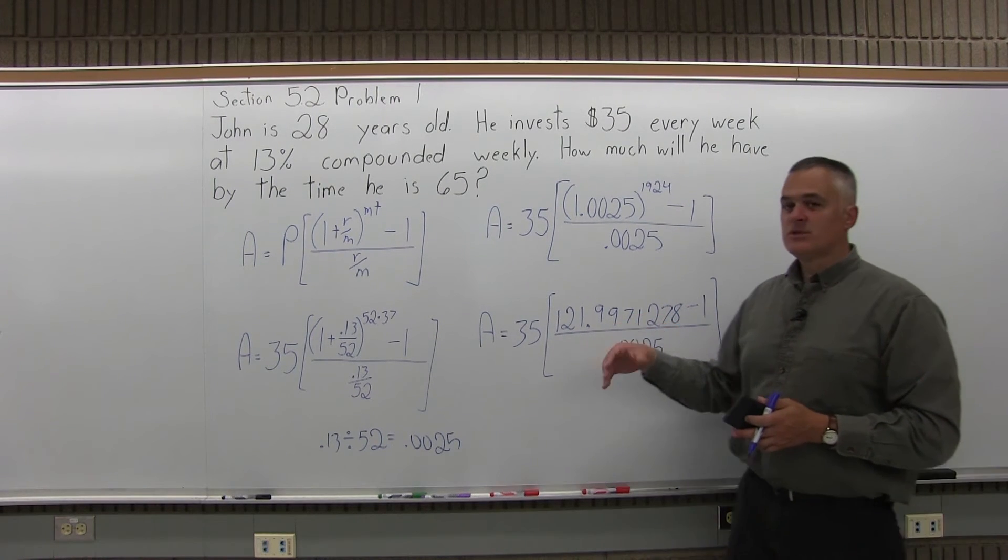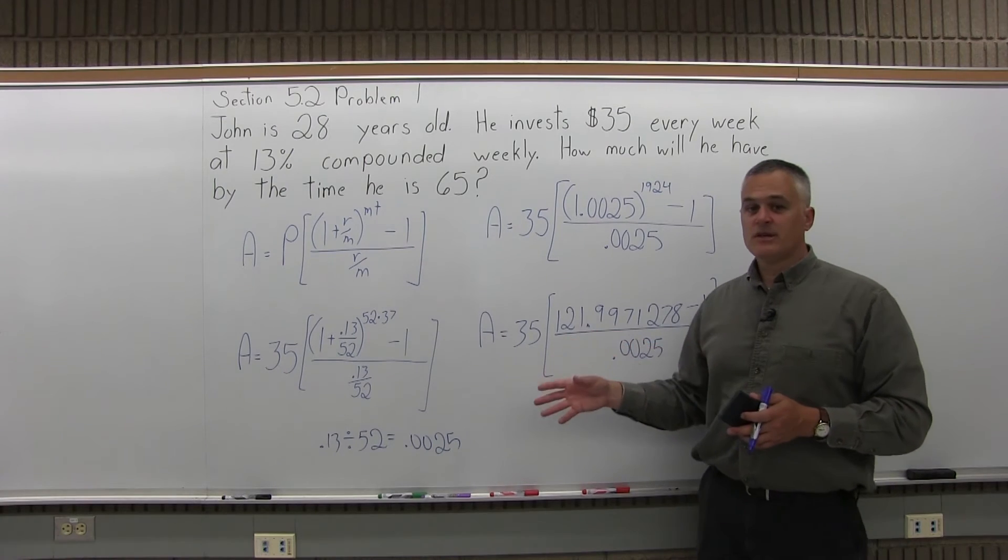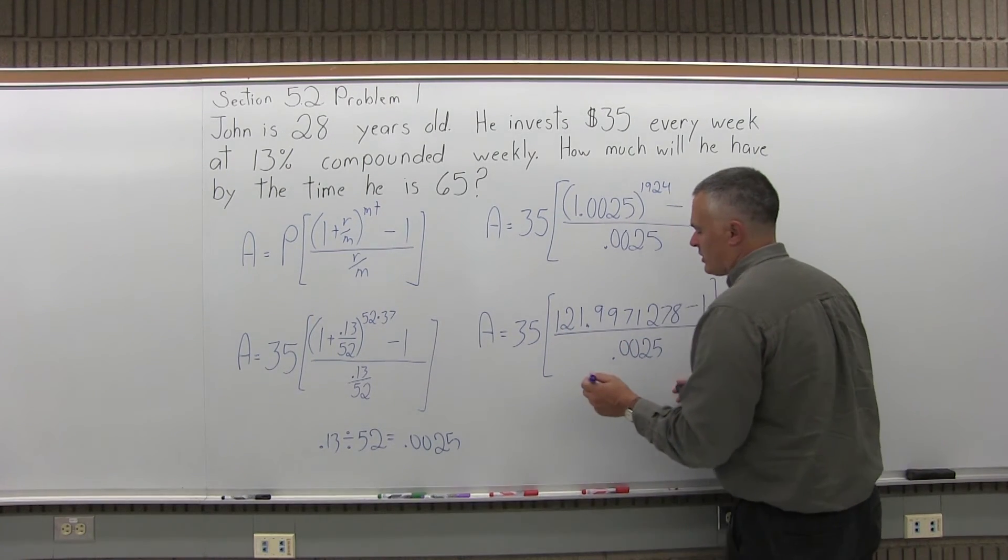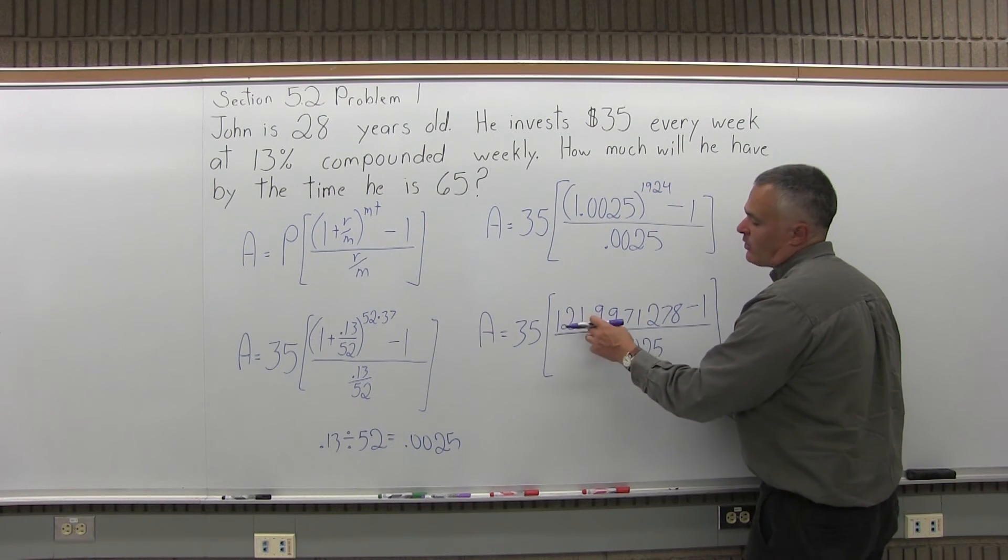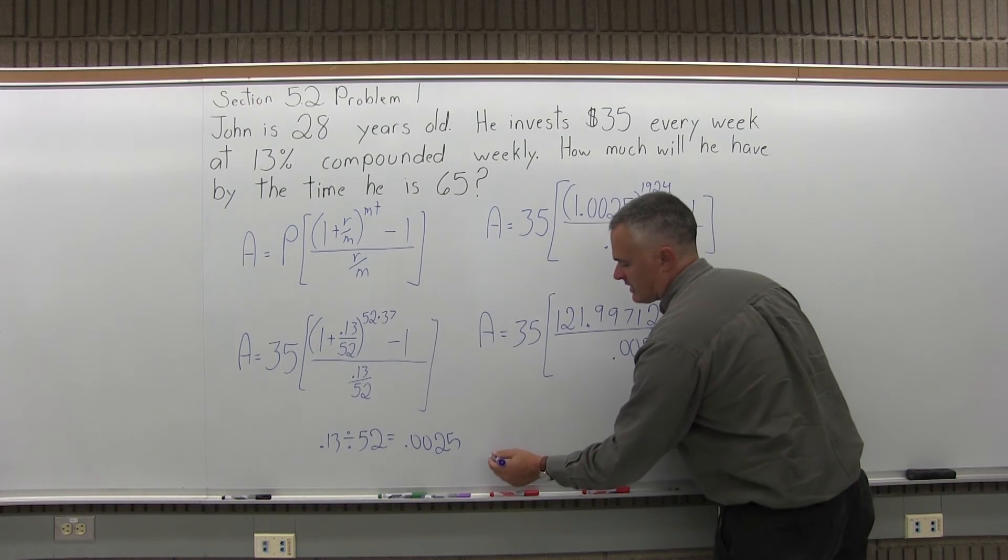And again, I'm going to let all the decimals just go through the computation for now, and I'll eventually round it at the end to two places after the decimal for how many cents. So now, when I subtract the 1, the 121.99 something is going to go down to 120.99 something.